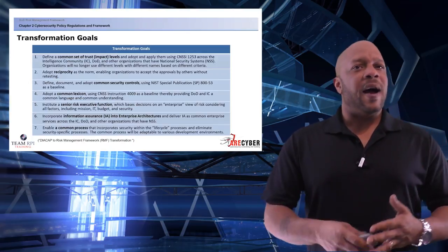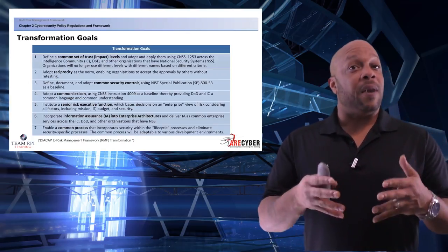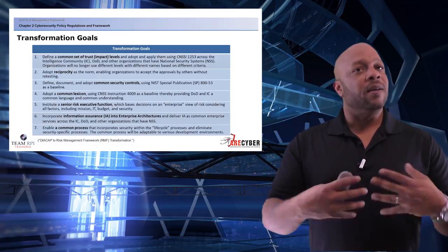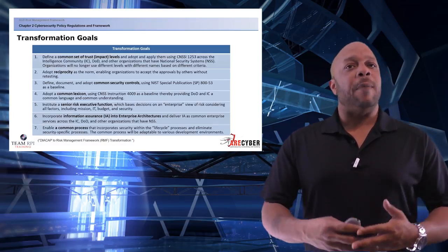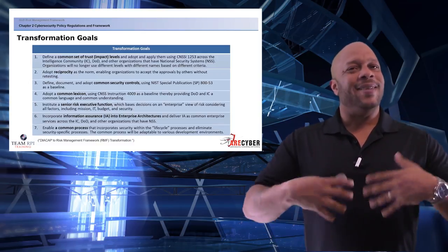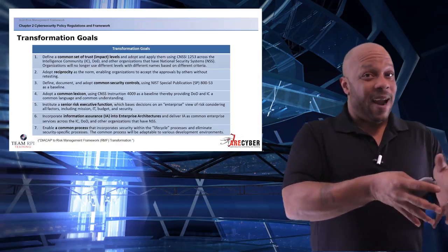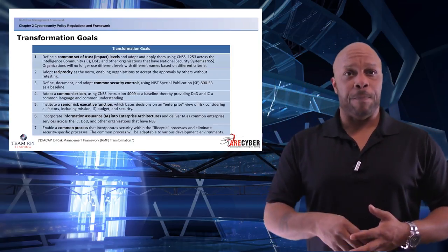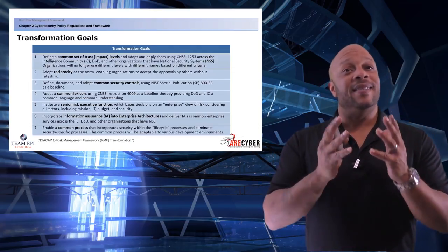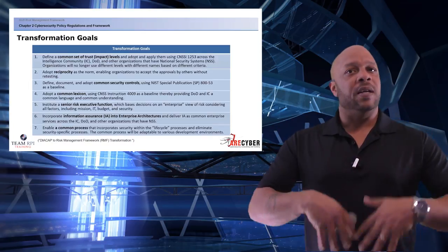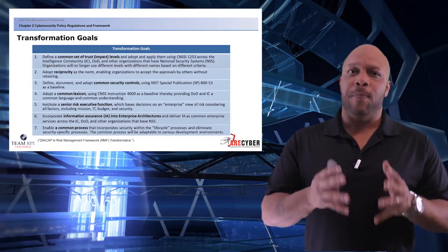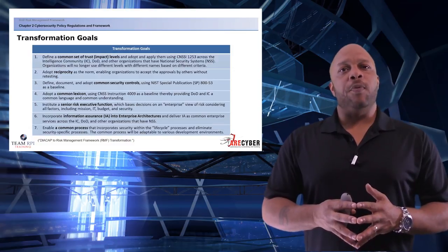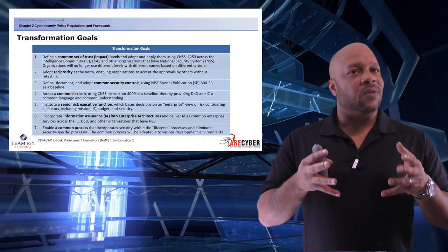Some of our transformation goals as we move into the framework are to define a common set of trust levels and to adopt and apply them using the CNSSI 1253 across all intelligence communities, DoDs, and other federal agencies — to adopt reciprocity. No need to continuously reauthorize systems just because they're moving from the Air Force to the Marine Corps to the Army and maybe to the Department of Energy. Next is to define, document, and adapt common security controls, done using the NIST Special Publication 800-53 as the baseline. Adopt a common lexicon — get us all talking the same language so we can approach the mountain of cybersecurity issues speaking the same language.